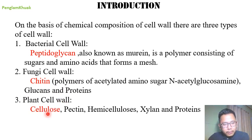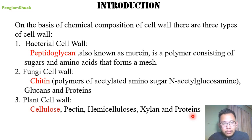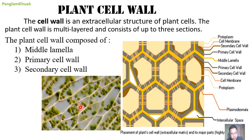In case of plant cell wall, the major component is cellulose. Next to cellulose, other substances present are pectin, hemicellulose, xylans, and proteins. Some amount of lignins will also be deposited in the plant cell wall. These are pictures representing plant cells observed under a microscope.